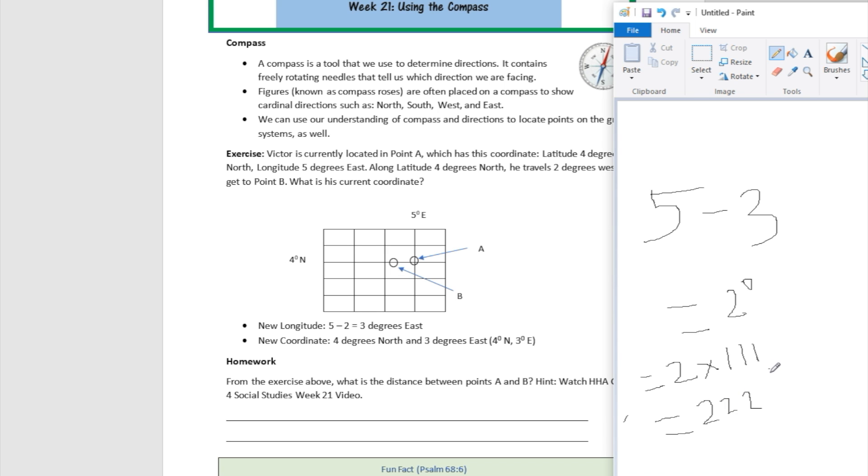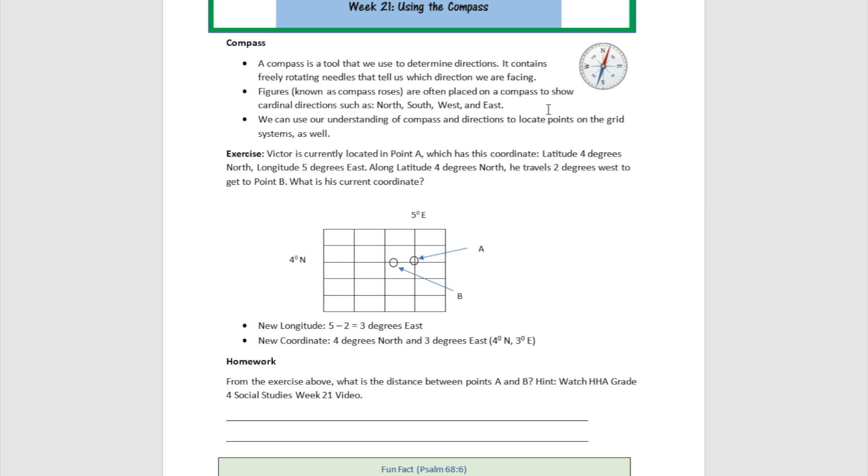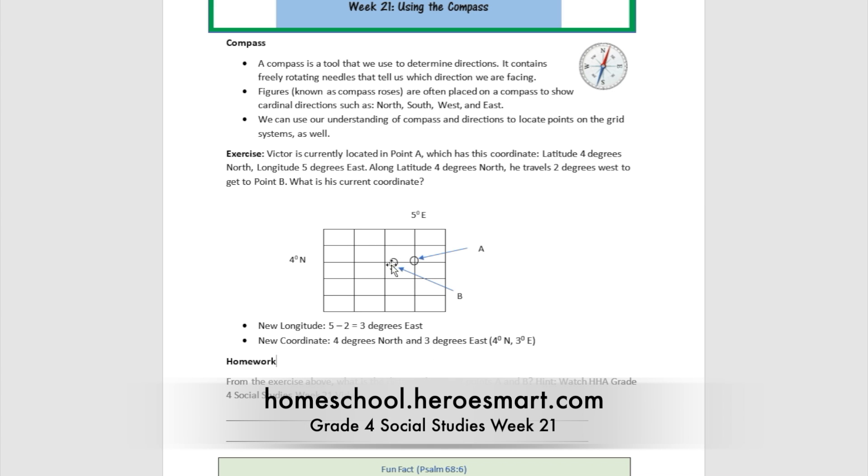222 kilometers, and that is going to be the distance between point A and B. Do you see how that's going to work? So understanding that when you move left to the west, your longitude is going to change a little bit. Understanding all of that and putting it together to solve this real-life problem.